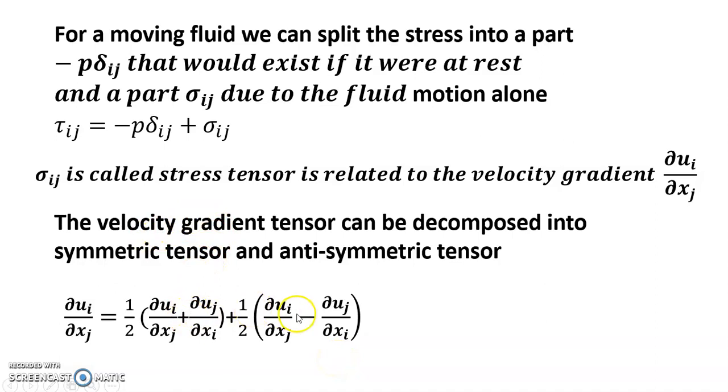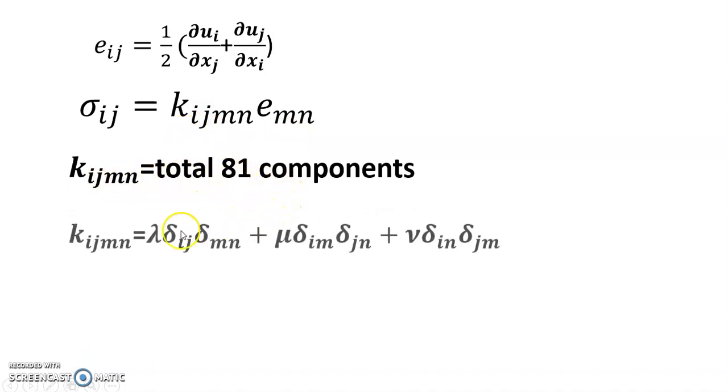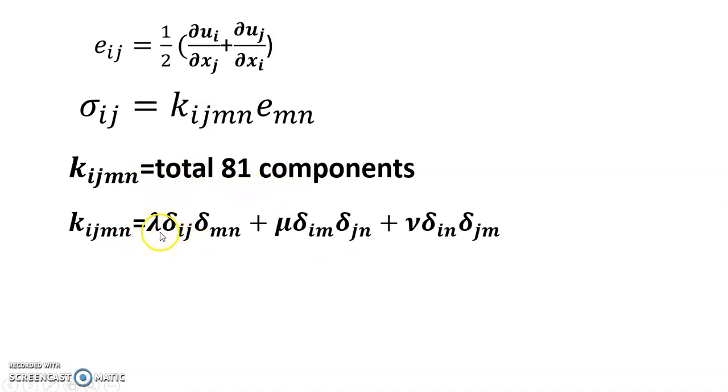Del u_i divided by del x_j equals half into del u_i del x_j plus del u_j divided by del x_i, which is symmetric, and the skew symmetric means anti-symmetric tensor. So e_ij can be written this way, and sigma_ij can be written as k_ijmn e_mn, where k_ijmn has total 81 components.